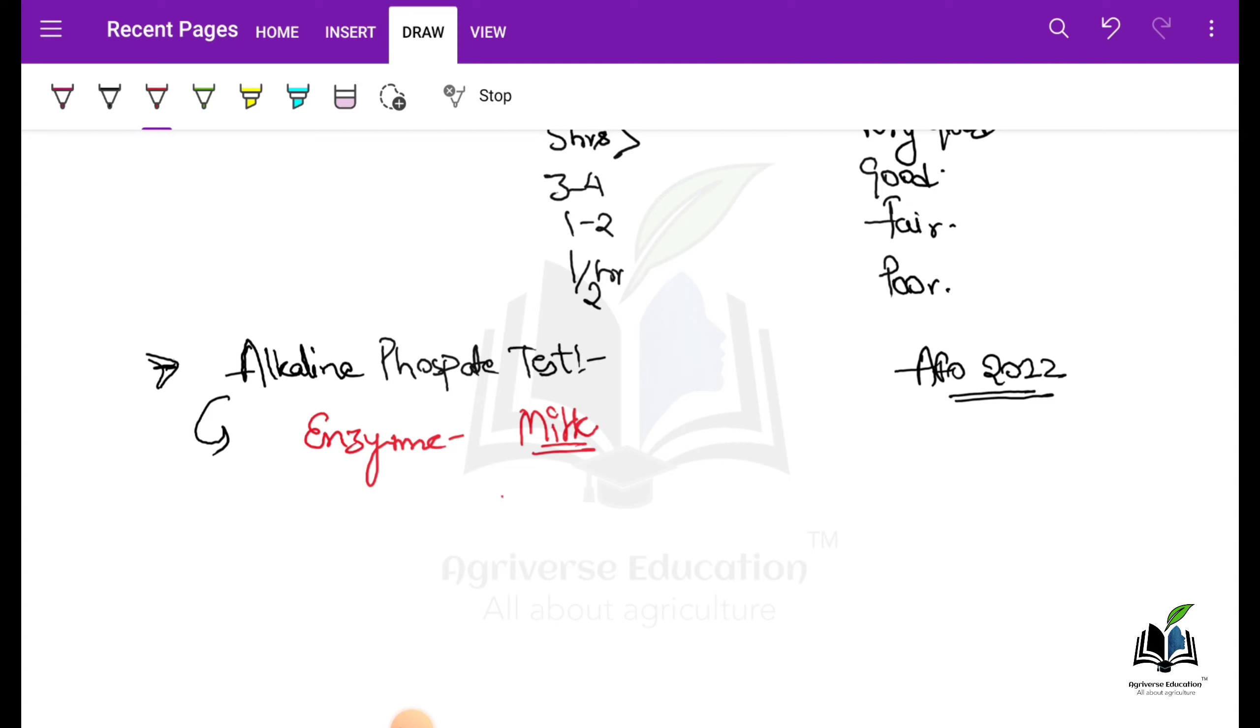This enzyme is destroyed at higher temperature, or the pasteurization temperature. If you find that this enzyme is in the milk, there is phenol formation, a yellow complex or yellow color. So it indicates that the milk is raw, it does not have pasteurization. So this is some methods that milk's quality can be tested.